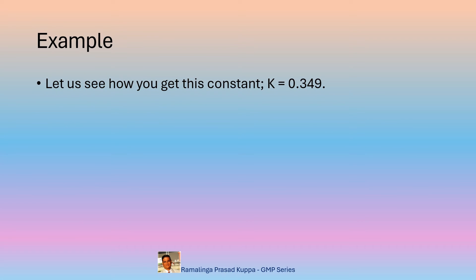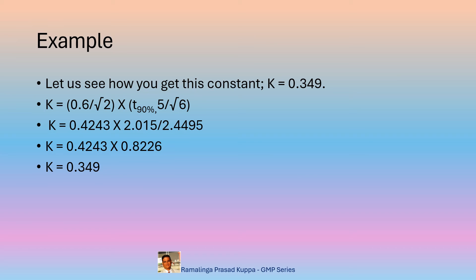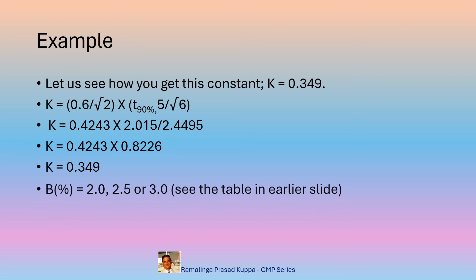Let us see how you obtain the constant K = 0.349. K = 0.6 ÷ √2 × T90 at 5 degrees of freedom ÷ √6. T90 for 5 degrees of freedom is 2.015, obtained from the T-distribution table. Working through the arithmetic gives K = 0.349 for a B value of 1.0.